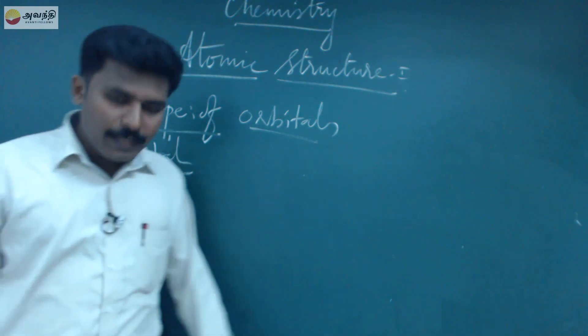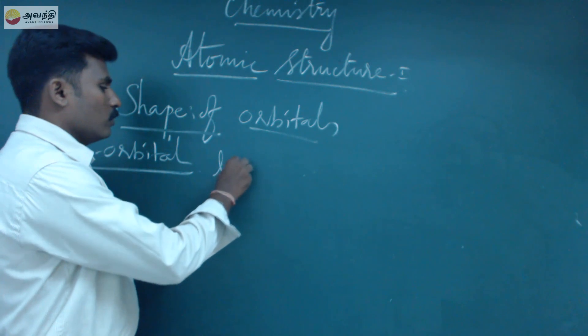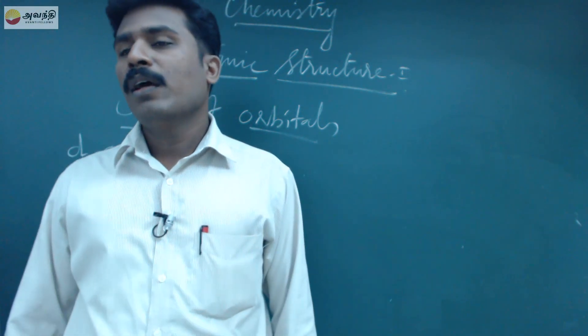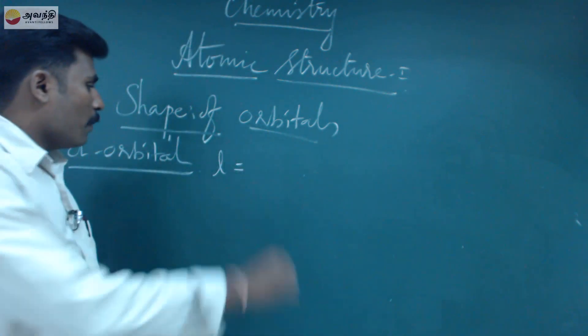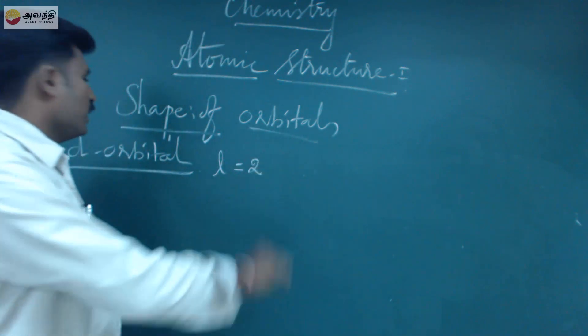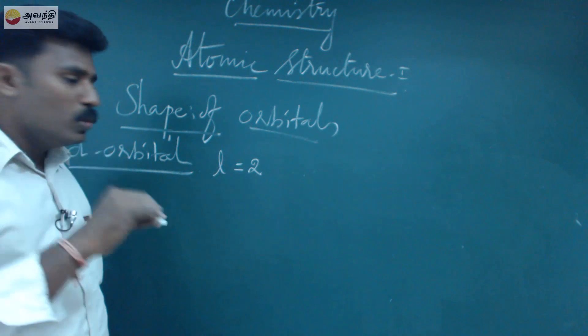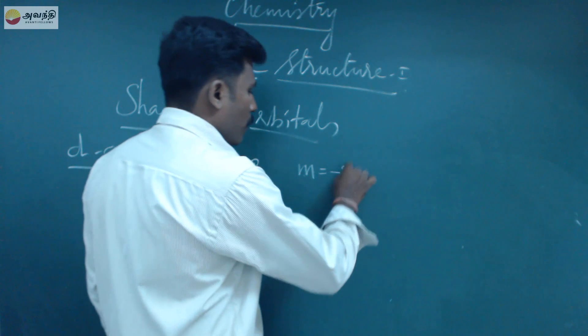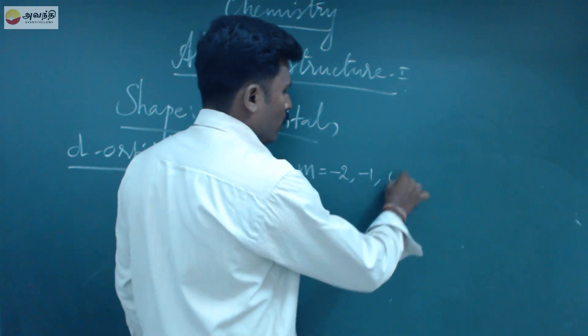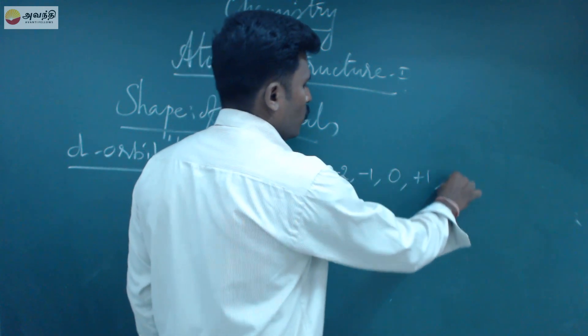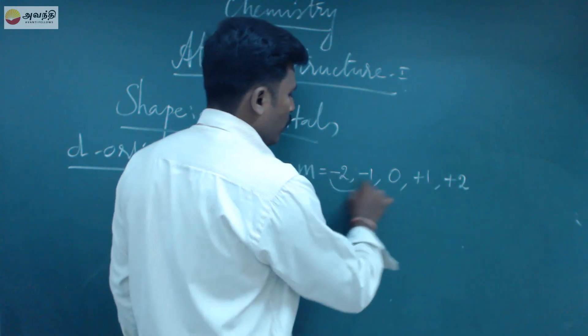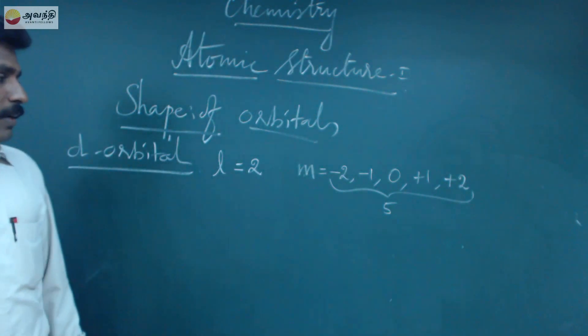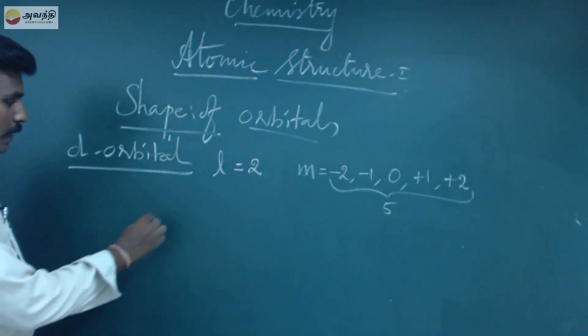For d orbital, the l value is equal to two. When l equals zero it's s orbital, l equals one is p orbital. The magnetic quantum numbers start from minus two, minus one, zero, plus one, and plus two. Totally five orientations are possible. The d orbital splits into five types.